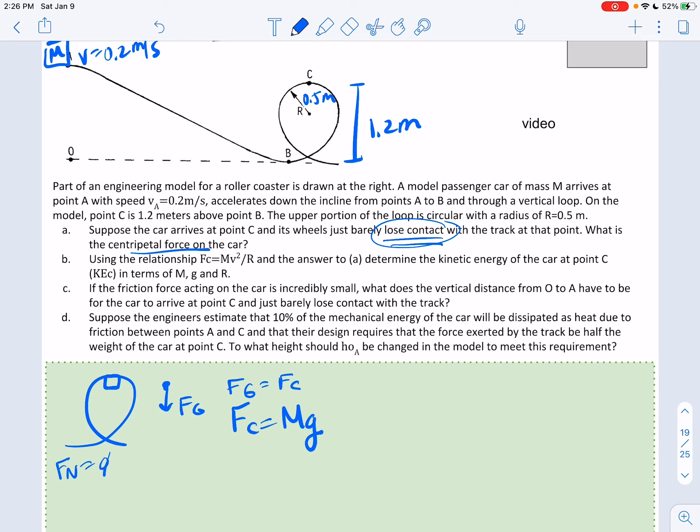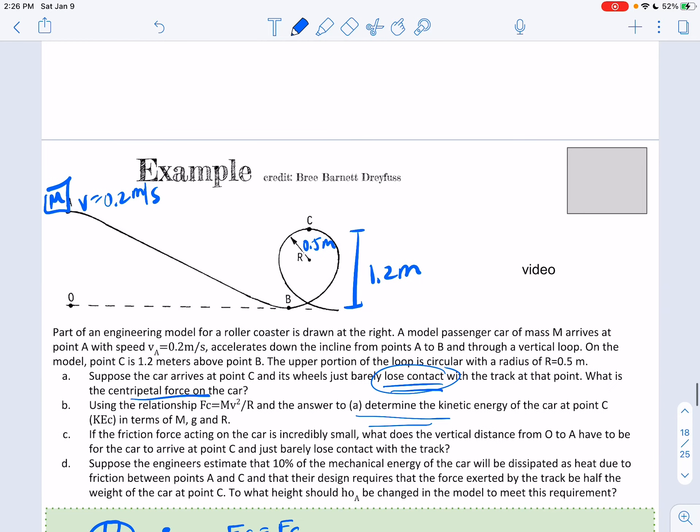So now if we're using MV squared over R and the answer to A to determine the kinetic energy at point C. So if we want to think about doing a little bar chart here, there's no work coming in or out, right? There's no friction. There's nothing else pushing it. It's just kind of doing its thing.